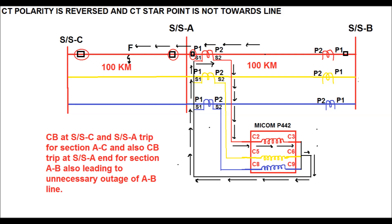That is why the CT polarity should be properly connected on both the primary and secondary sides of the relay, and the CT star point should always point towards the protected object — in the case of a transmission line, the star point shall be towards the line. This demonstrates the importance of CT polarity and CT star point for transmission line protection. If you like my videos, please subscribe to my channel, press the bell button for notifications of future uploads, and do comment with your feedback, which is necessary for the improvement of future videos. Thank you.